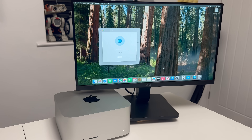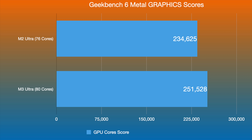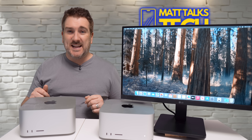First, let's look at the initial things most people talk about — the Geekbench CPU scores. In single-core performance we see some gains: 3,216 over 2,786. Multi-core performance is 28,000 versus essentially 22,000. For graphics scores, we're getting 234,500 compared to 251,500. It's definitely better, but not hugely ahead as we thought it would be with the M3 Ultra — a little disappointing there.